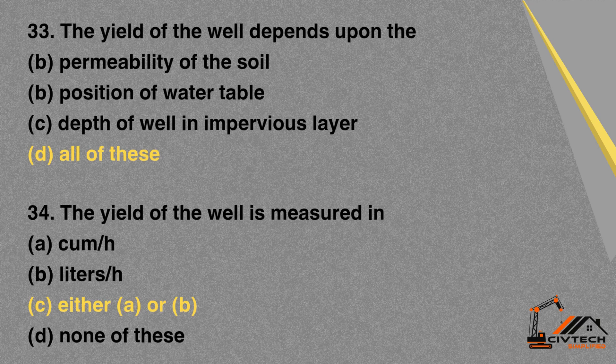MCQ 34: The yield of the well is measured in — A. Cubic meters per hour. B. Liters per hour. C. Either A or B. D. None of these. Correct option: C. Either A or B.